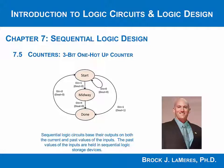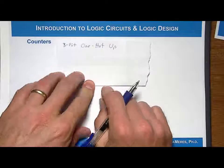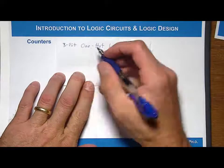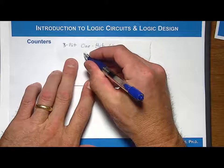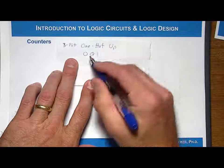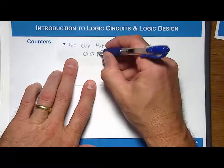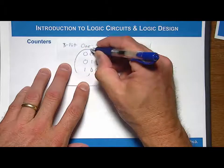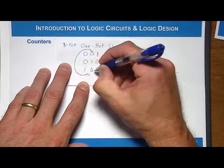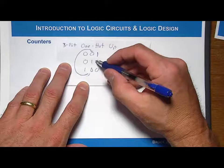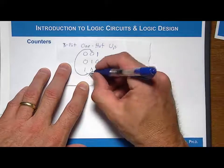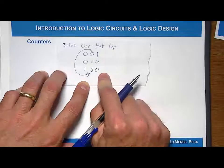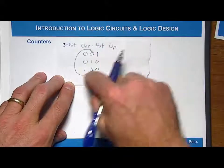Let's now look at a different type of counter: a one-hot counter. Let's do a three-bit example. A one-hot counter is similar to the one-hot state encoding we talked about, where we have a count where one bit will be asserted at any given time. For a three-bit counter, we go 001, then 010, then 100, and then it repeats. Notice that one bit is asserted at any given time, and you never have the code 000. So it's three bits, and that's the one-hot pattern.